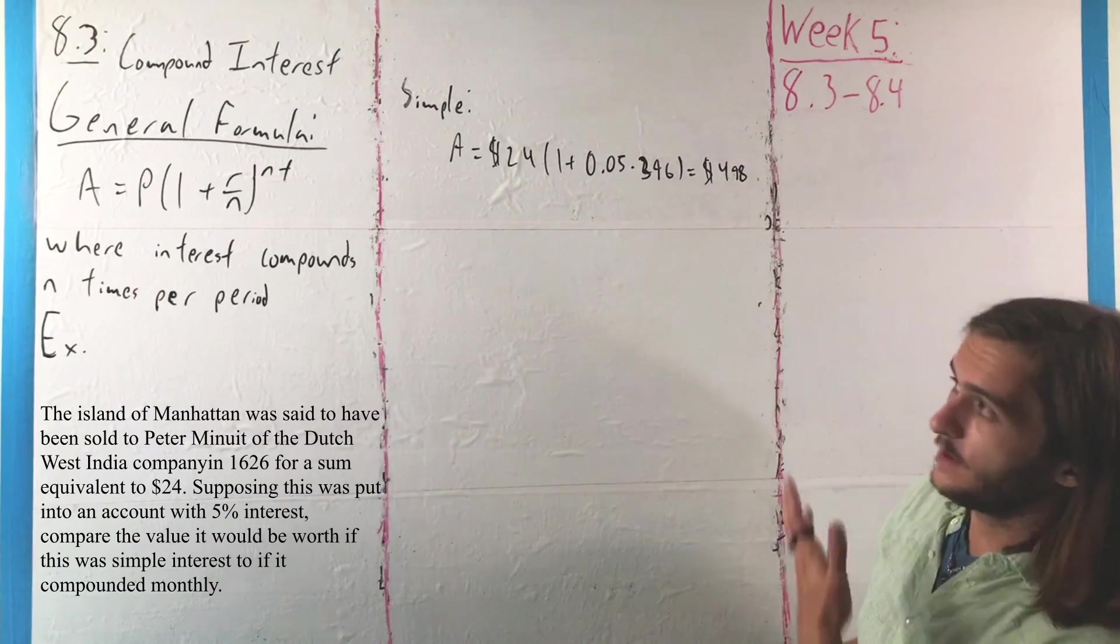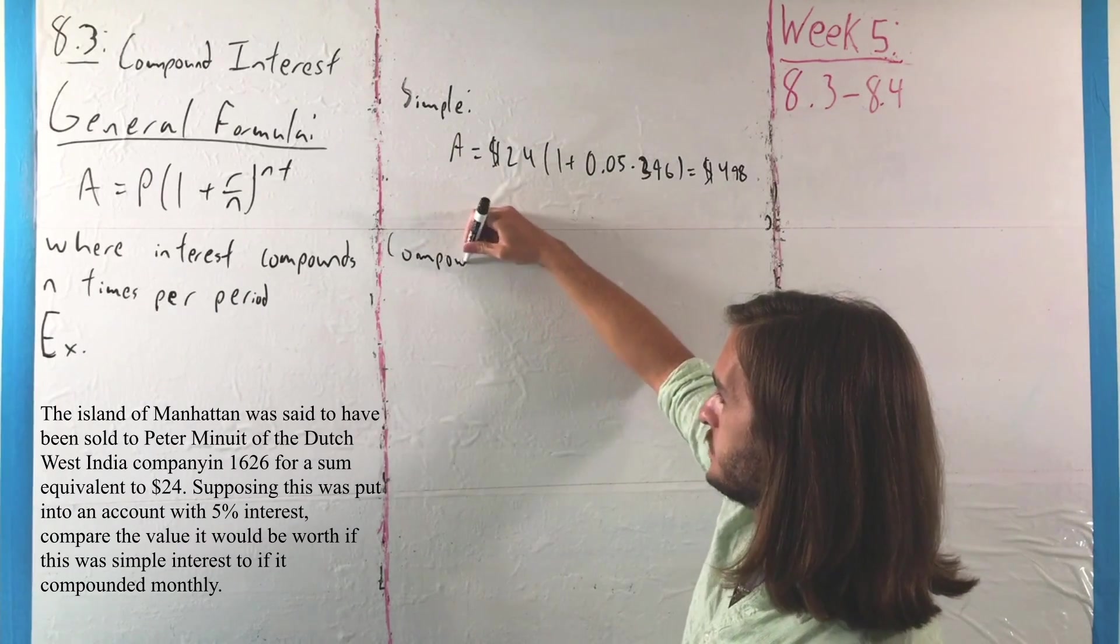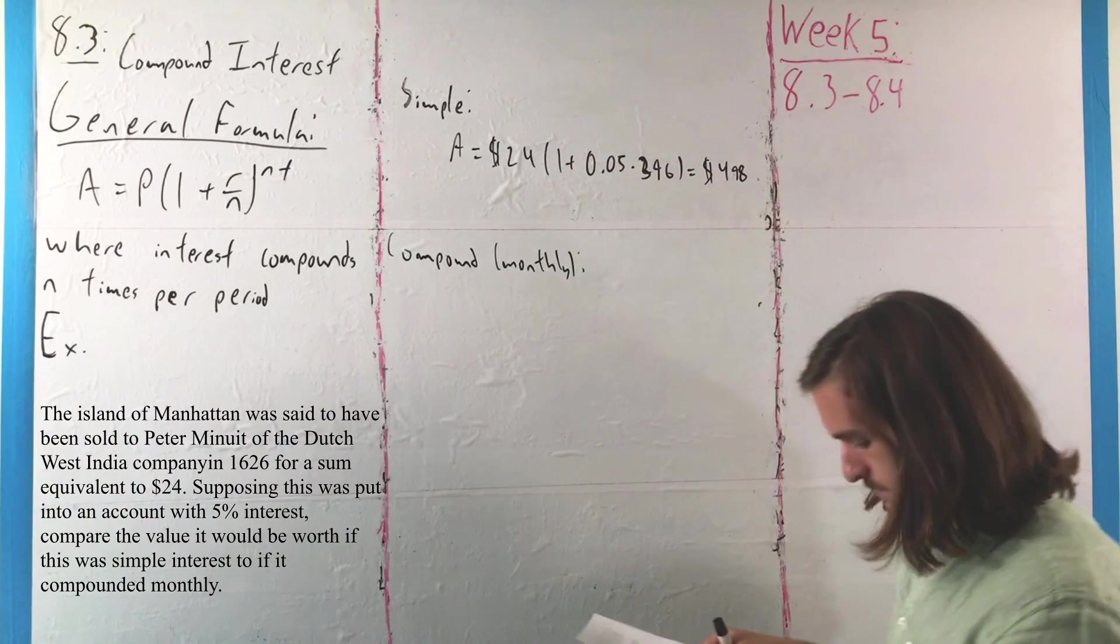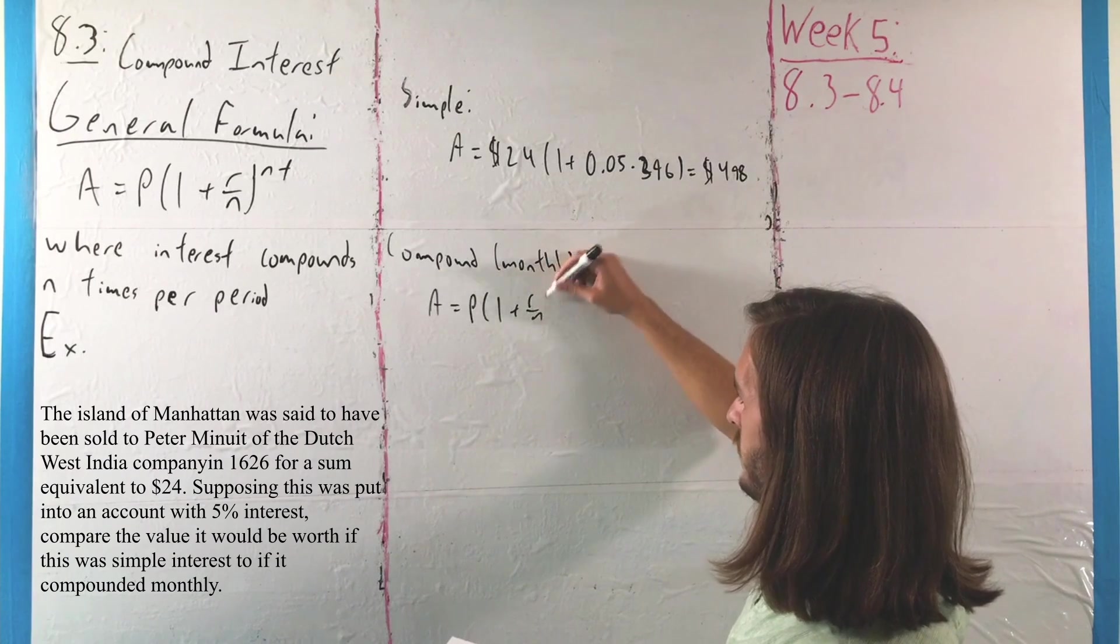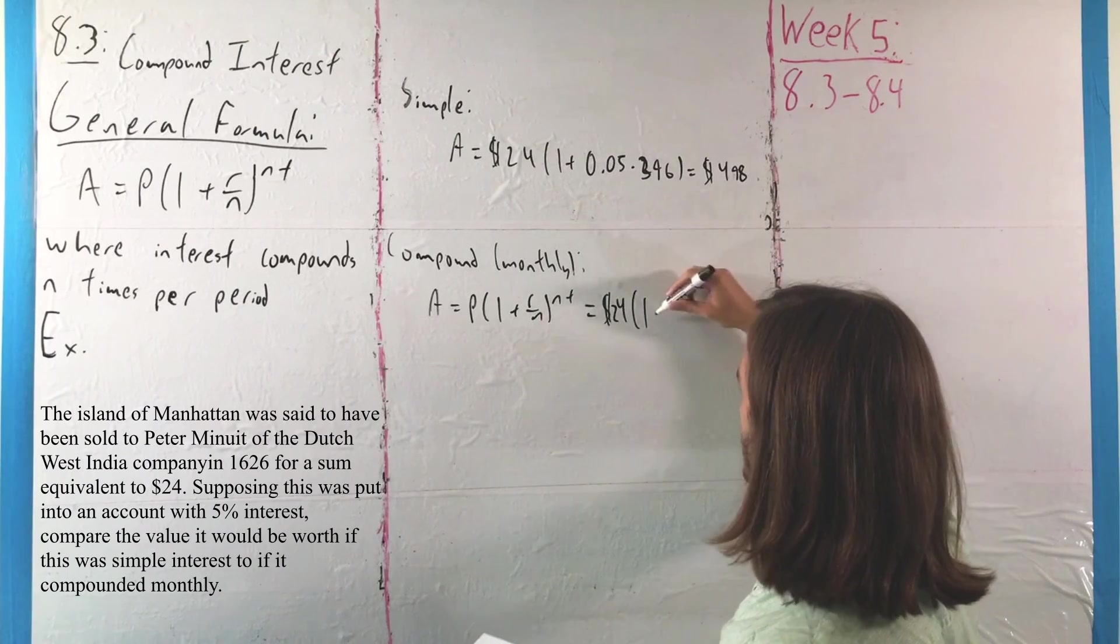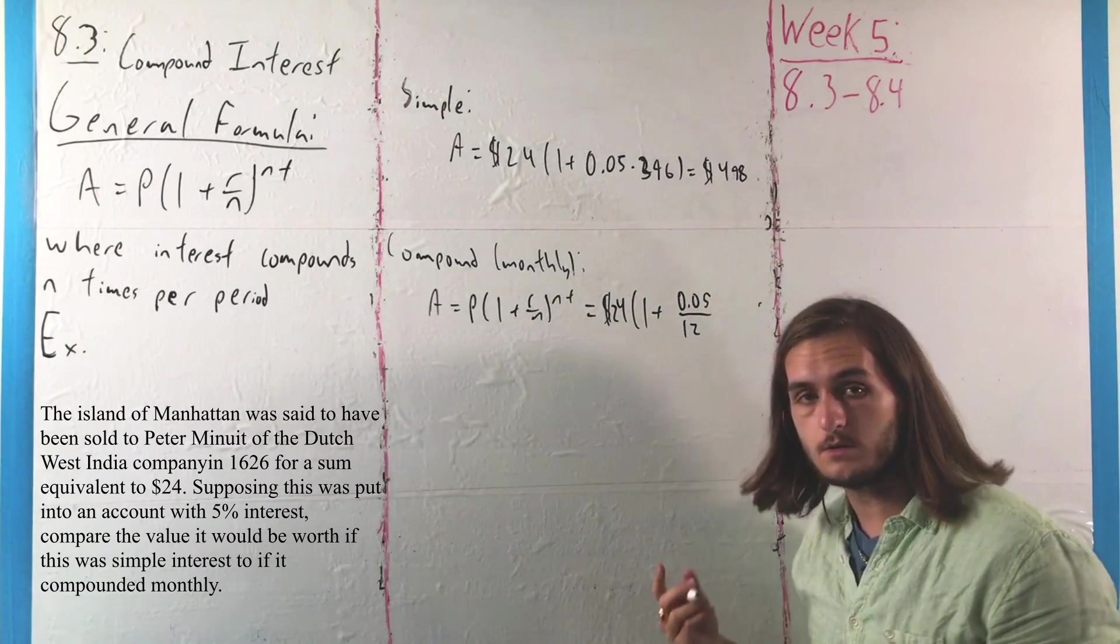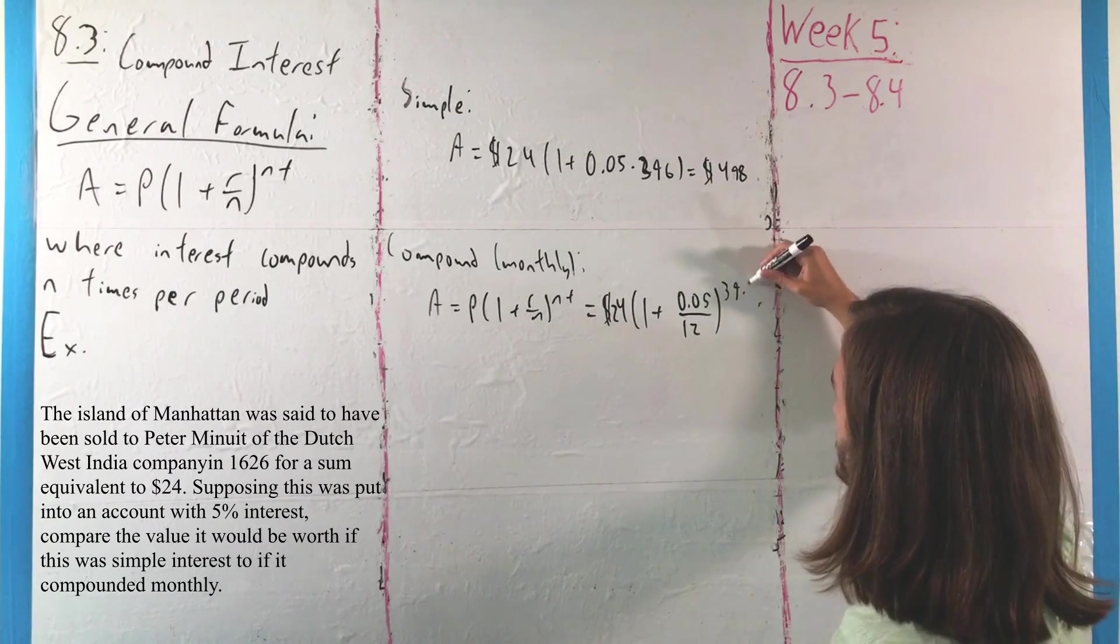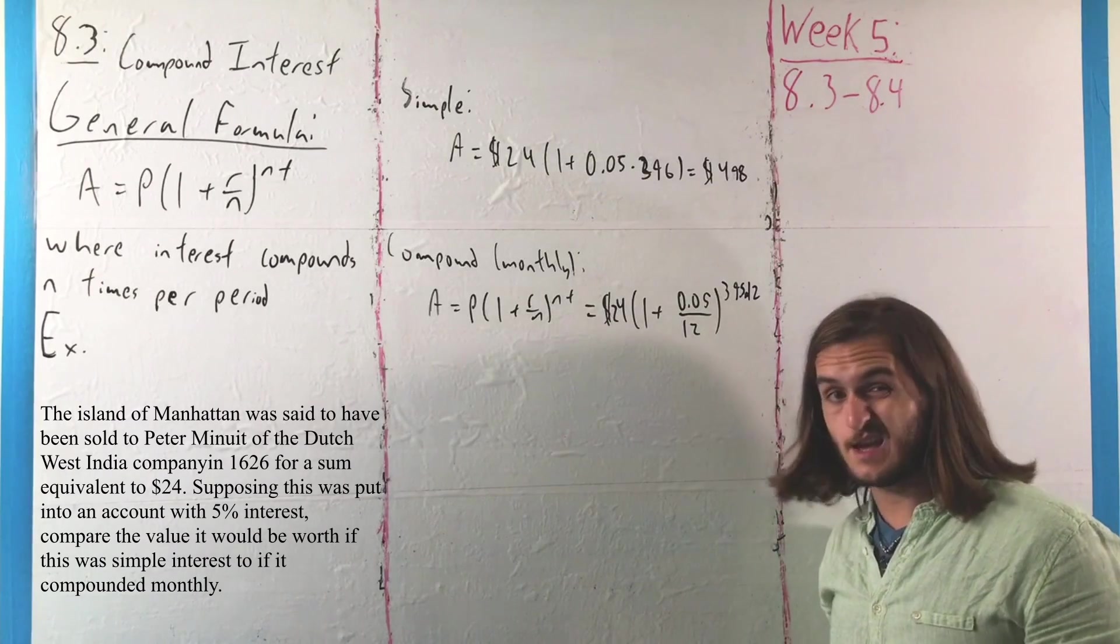However, on the other hand, if we assume that they take something with compound interest, in particular compound interest that compounds monthly, there we would be following the formula A equals P times 1 plus R over N to the NT, where in this case P is still only $24, 1 is still 1, R is still 0.05, and now we're dividing that into 12 parts because it compounds 12 times per year, and then up here we're going to get the really silly value of 395 times 12. And this is where compound interest really explodes, is in that exponent.